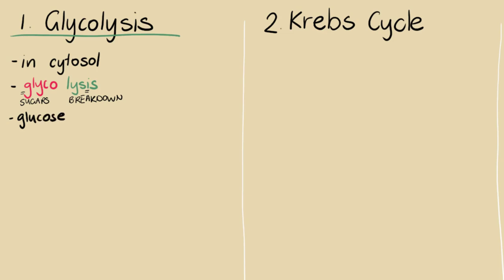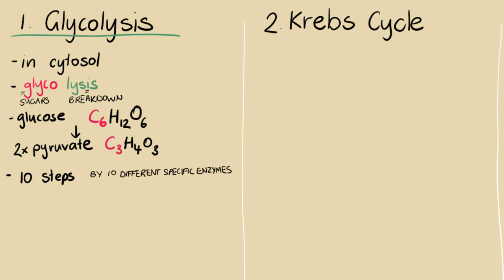If we're working with our model glucose, it's a six carbon molecule and it's broken down into two three carbon sugars called pyruvates. The process of glycolysis takes 10 steps done by 10 different enzymes who each have a specific job to do.